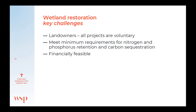For wetland projects in Denmark, key challenges include landowners, since all projects are voluntary — this is also one of the main reasons many projects are not completed. Another challenge is meeting all minimum requirements for the different wetland types; the minimum requirements for nitrogen and phosphorus retention must be met in order to fund the restoration. Over the past five or six years, minimum requirements have been lowered to restore more wetland areas. The last key challenge is money — landowners must be compensated for loss of agricultural productivity or they sell their land to the government, and total project costs must be reasonable compared to the amount of nitrogen, phosphorus, or carbon sequestered.